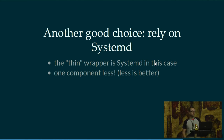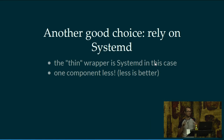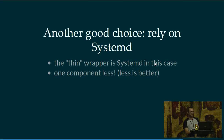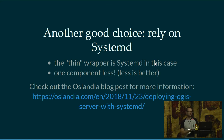Another good choice we found is to rely on systemd directly. Systemd has all the mechanisms needed for this — there is a socket service type you can use to create a socket, and it can spin up your process. In this case, you don't use spawn-fcgi as a wrapper; systemd itself is the wrapper, so it's one component less. You still need to write a systemd service, but it's quite a good solution and we have good experience with it. We actually have a full blog post explaining how to set this up if you're interested.